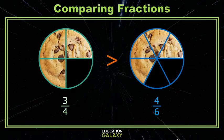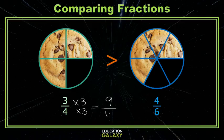So I could create common denominators of 12. Let's do that together. To create a common denominator of 12, we'll multiply 3 fourths top and bottom by 3. That gives me the equivalent fraction 9 twelfths.